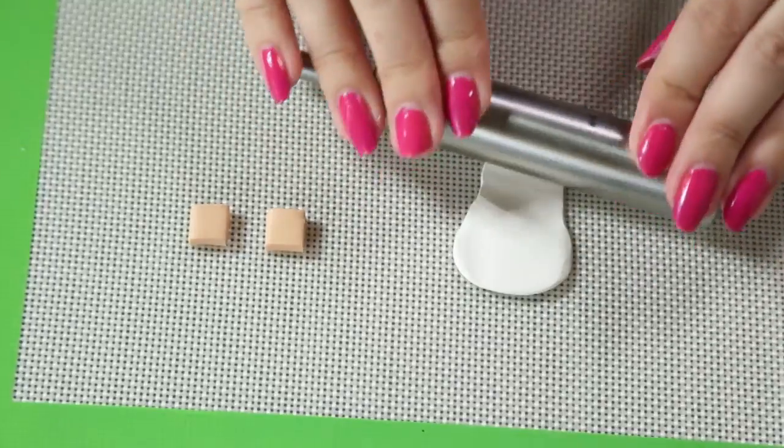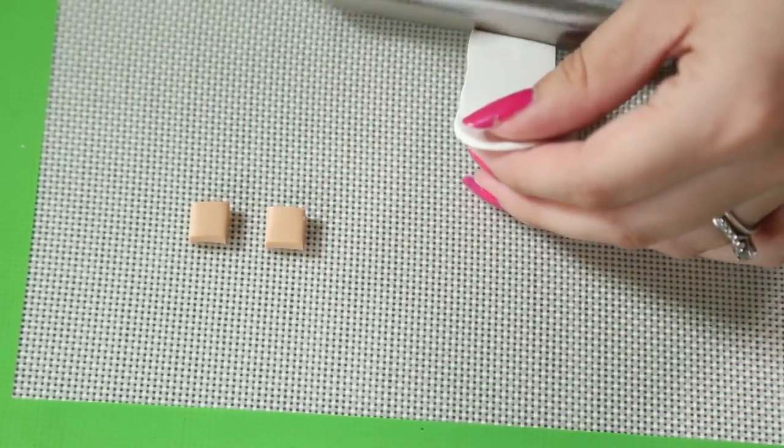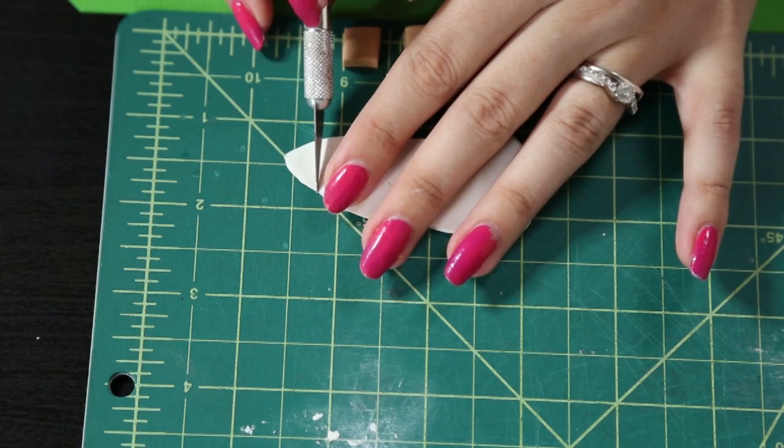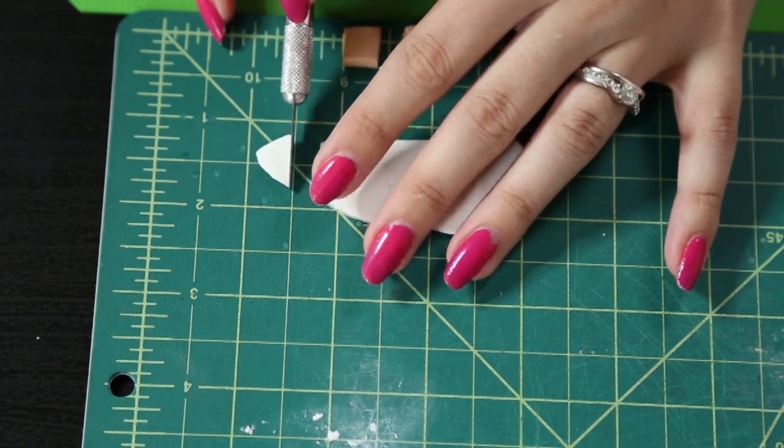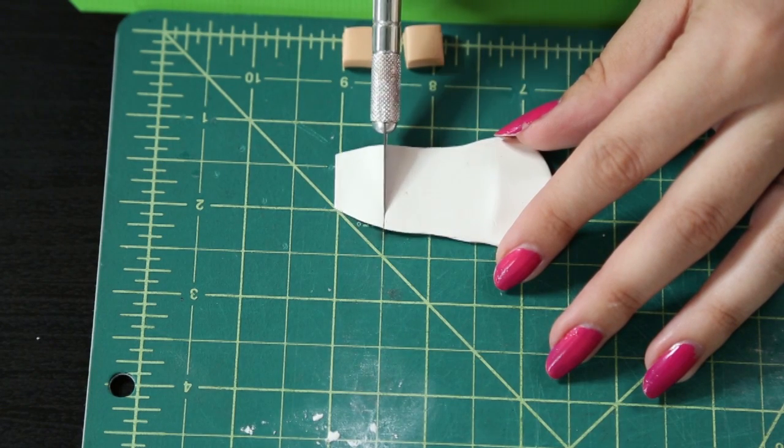So now I'm going to change my surface because this was sticking to my cutting board. This is actually a baking sheet and the clay doesn't stick to it at all. So roll out your white clay super flat, and we're going to cut a piece that's a little bit larger than the squares that you just cut.